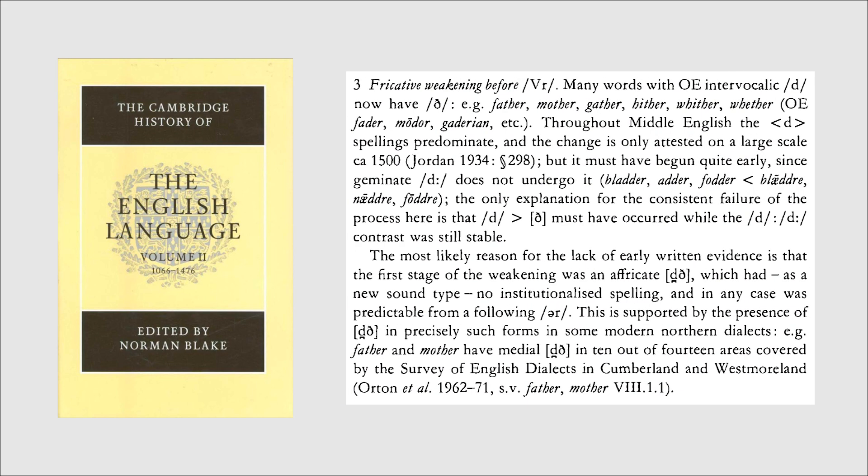So after some digging, I found in the Cambridge History of the English Language, Volume 2, page 64, this little snippet. Yep, it's because Middle English D gained a new affricate allophone D, well before a vowel followed by ER, before finally splitting off from the phoneme D and merging with TH.